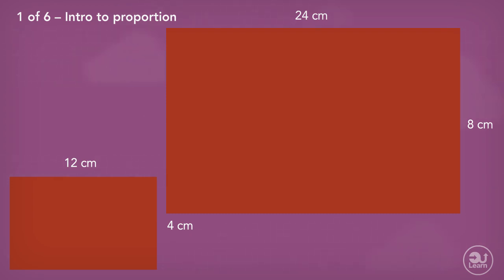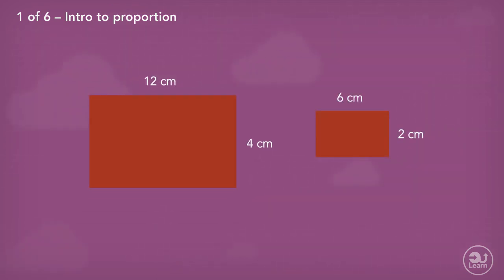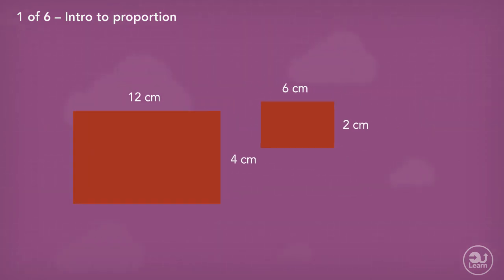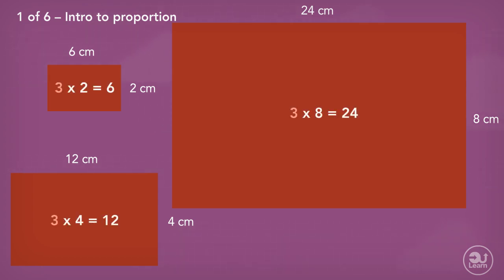What would be the dimensions of a shape half the size of the original? The length of 12cm and 4cm will be halved, giving us a new length of 6cm and 2cm. These three shapes' dimensions have the same proportion, because the relationship between each height and the length are the same. Each length is three times larger than the height. Therefore, they have the same proportion.